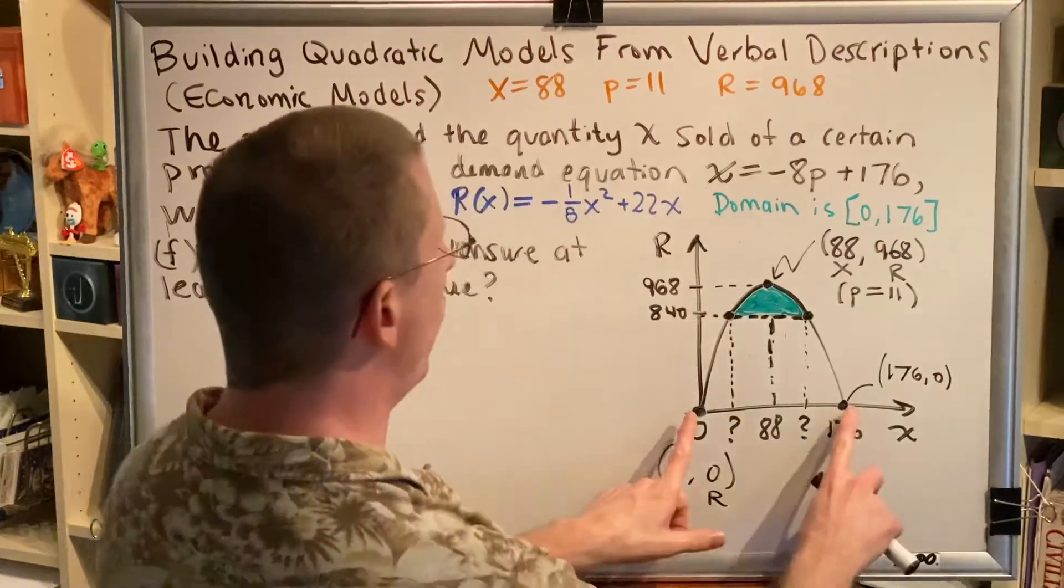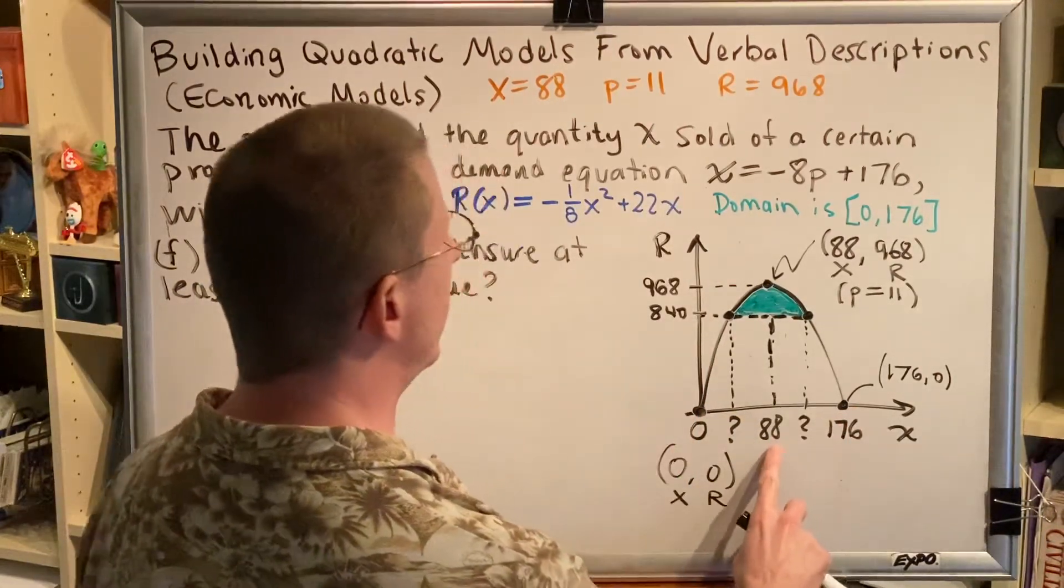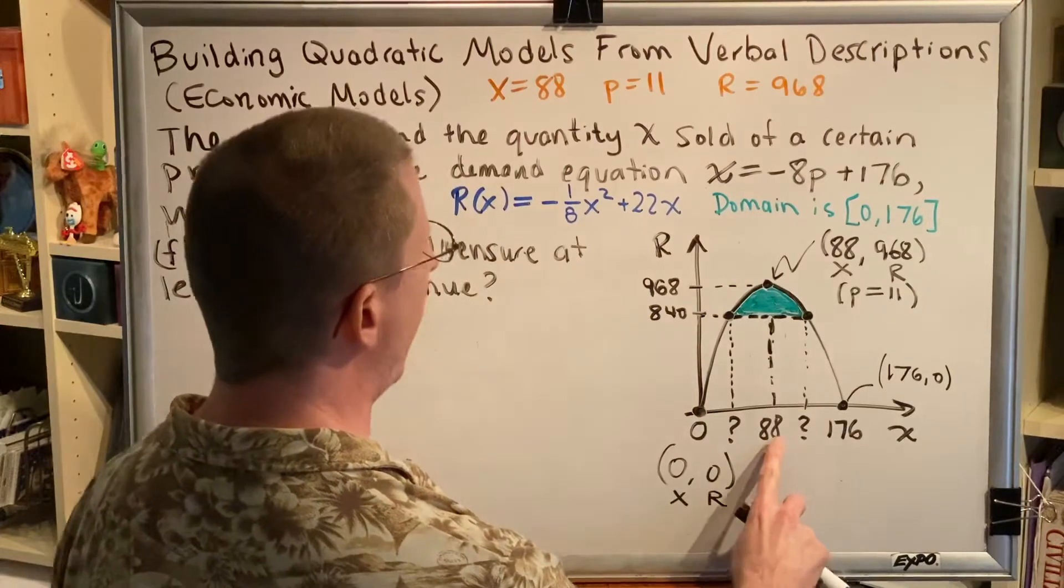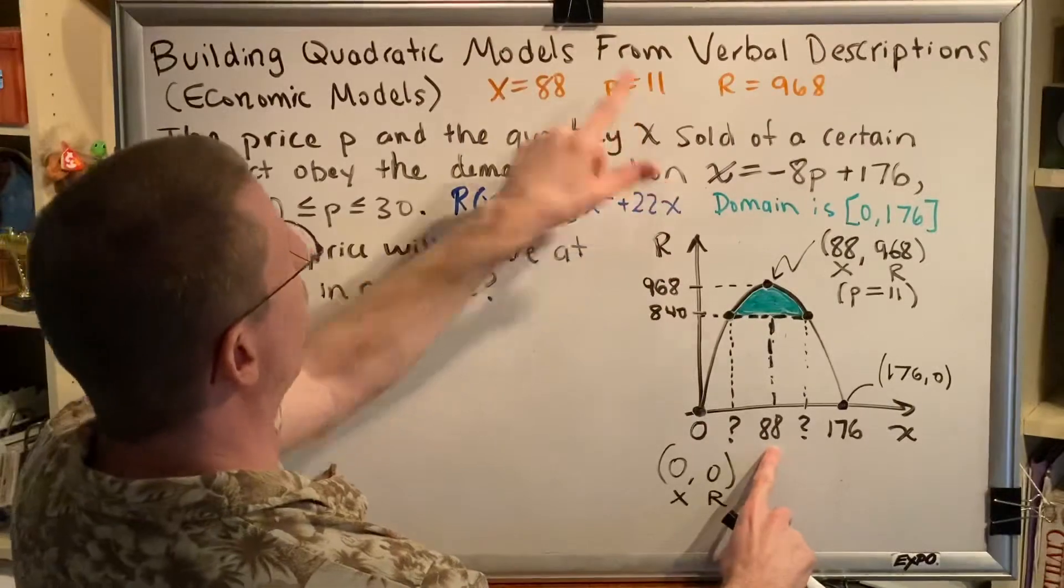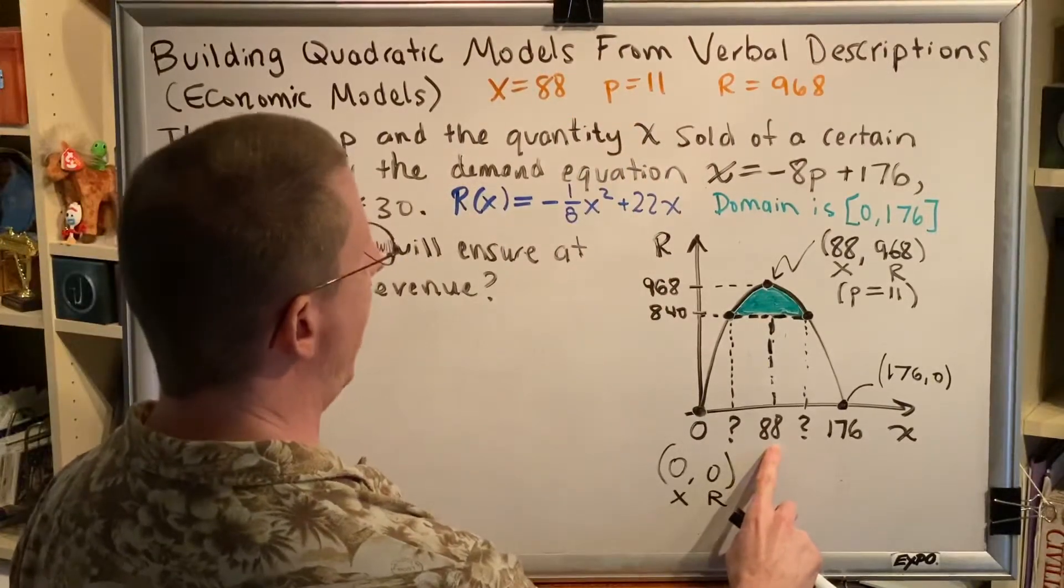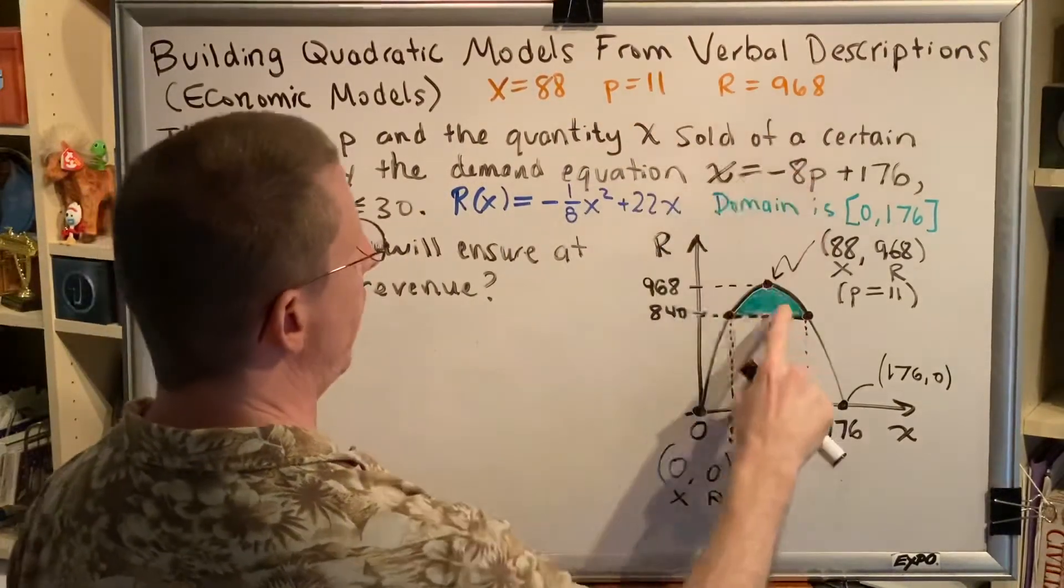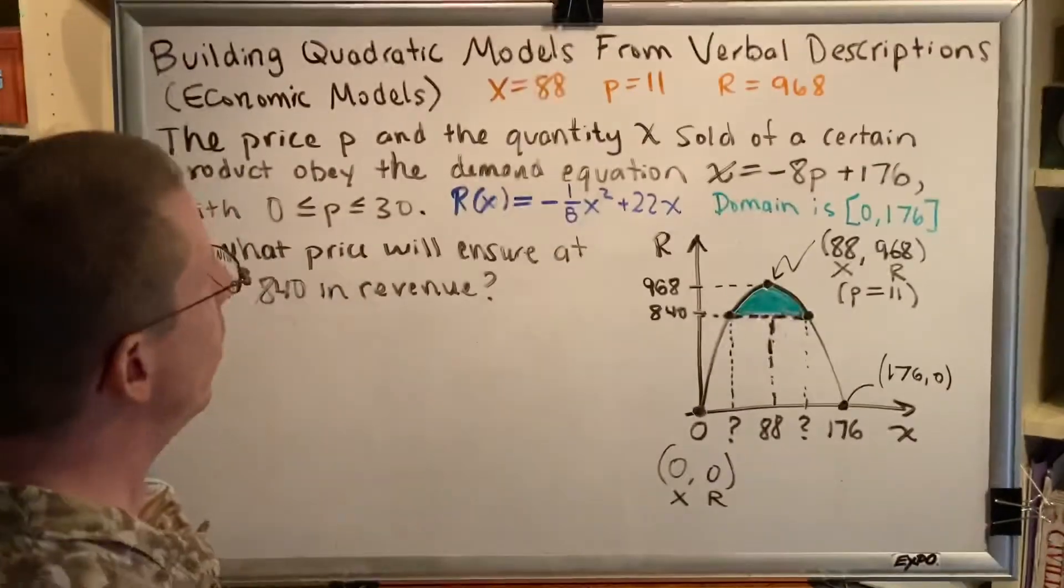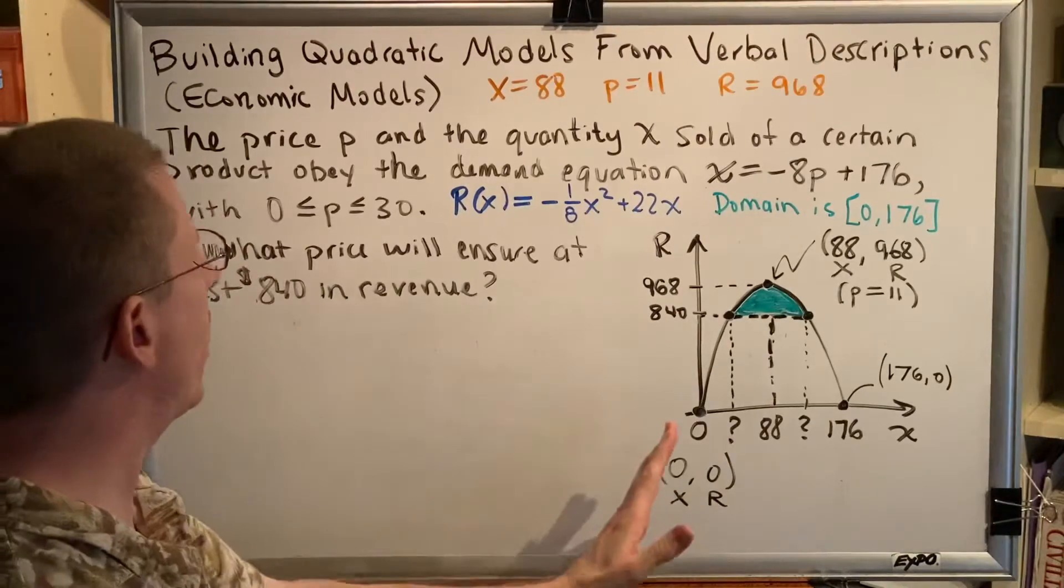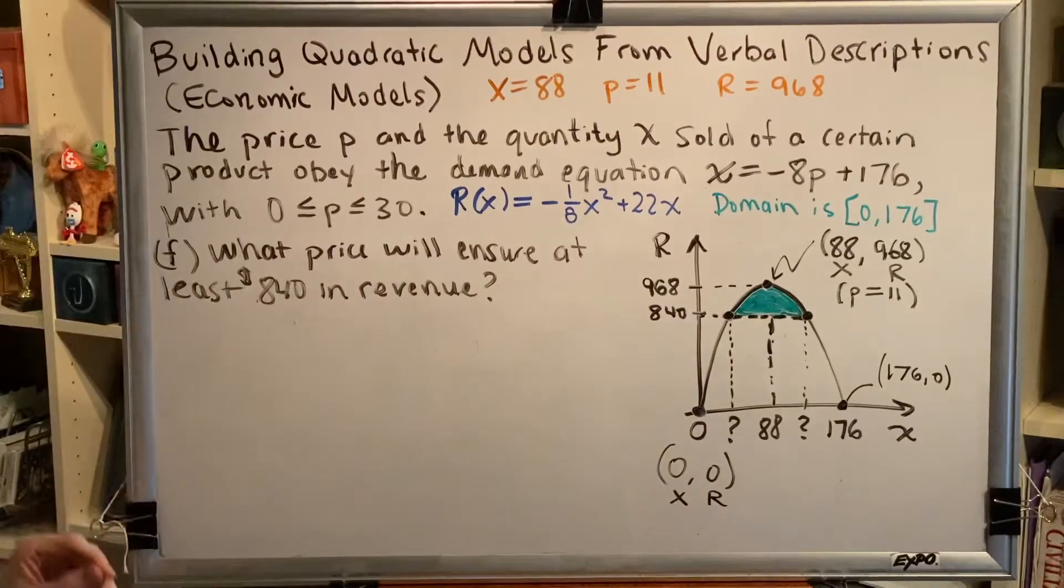This is telling us the quantity of items that will bring in zero dollars. Right in the middle, halfway between those two values is the perfect amount for us to try and sell. If you sell 88 items, which you would have to charge $11 in order to do that, then 88 times 11 would bring in the maximum revenue of $968.